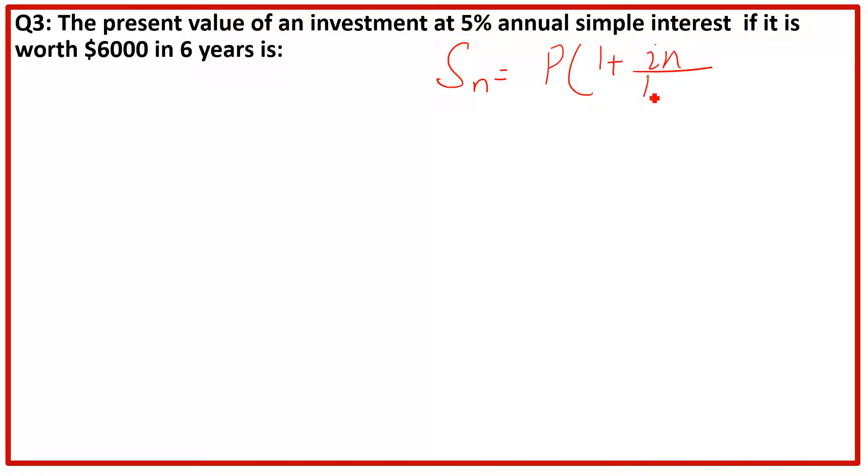And then we will see what is given in the question. The present value, P, we have to find out. The interest rate of five percent is given. Number of years, six years. M, and then Sn equal to six thousand.